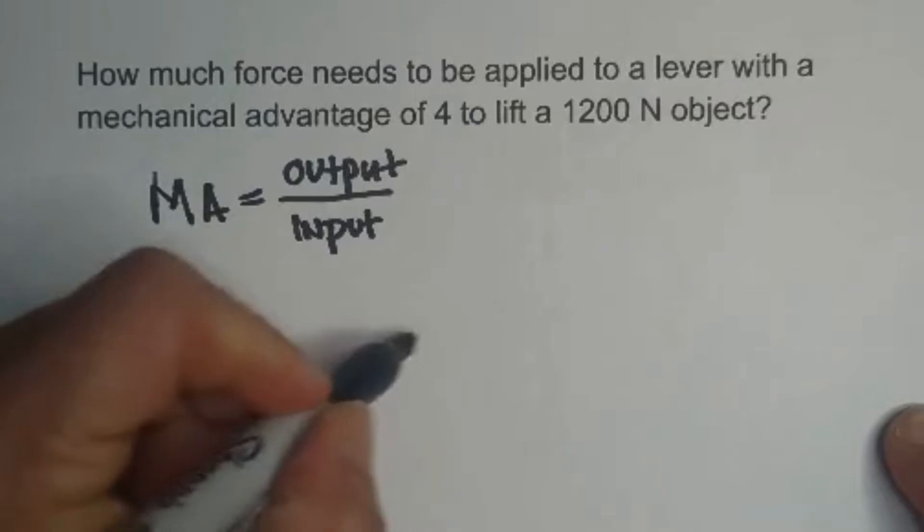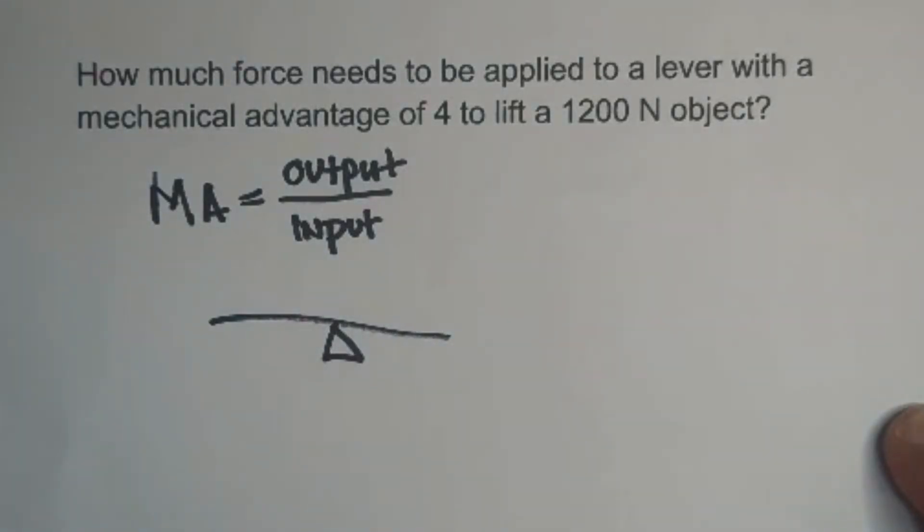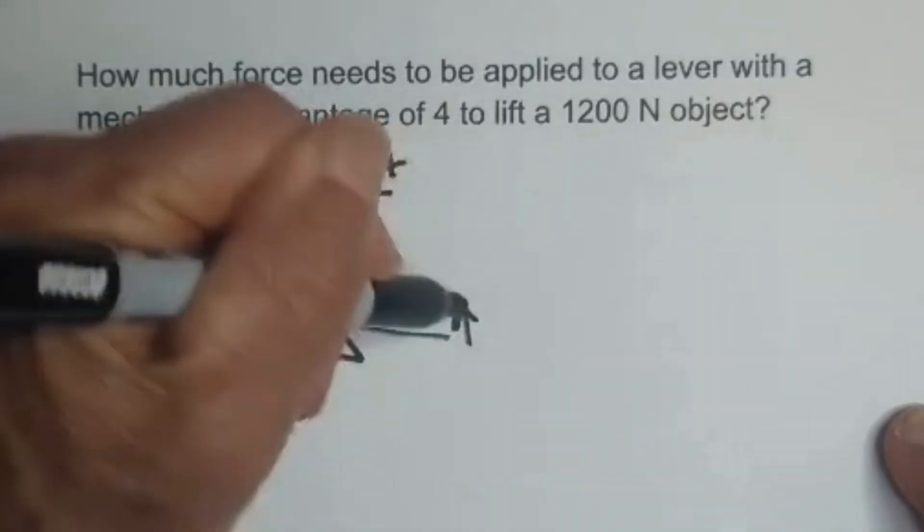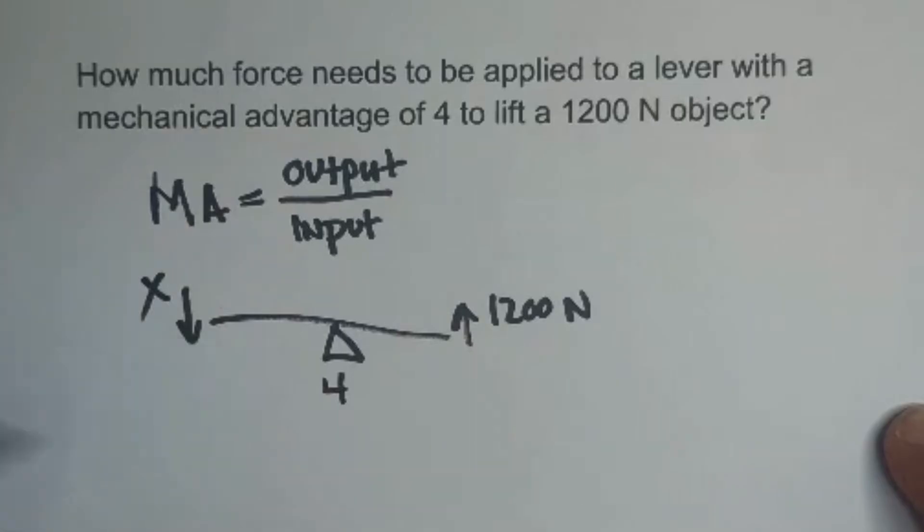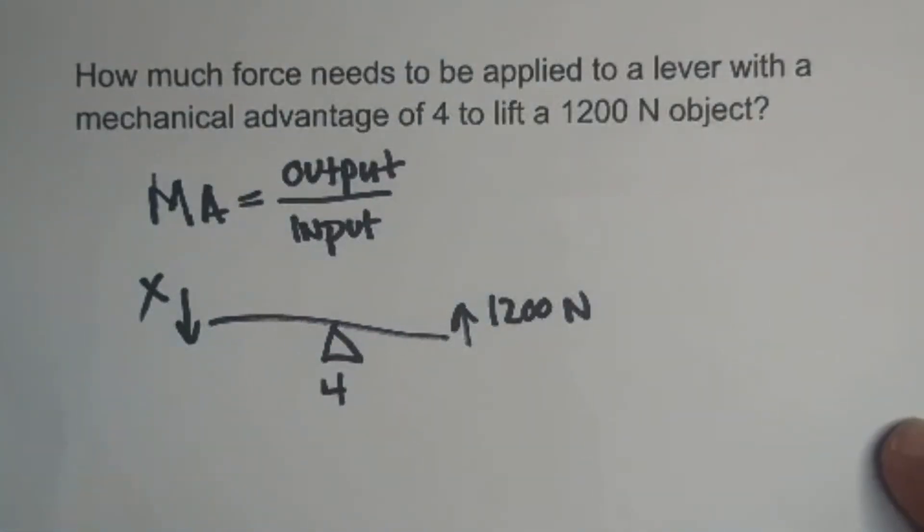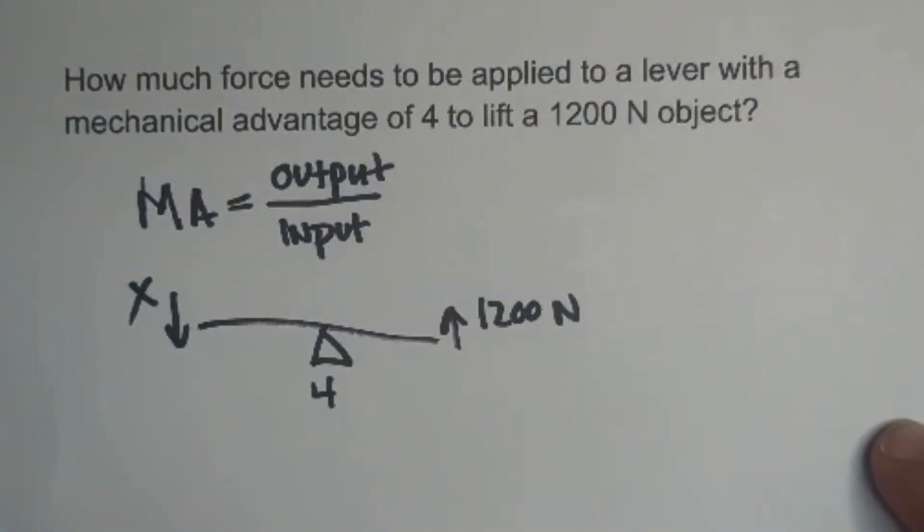So let's look at this. We have a lever, and we want to know what the input is, how much effort you have to apply, so we'll call that x. And we need an output of 1200 newtons, and we have a mechanical advantage of 4. So let's just plug in what we have.